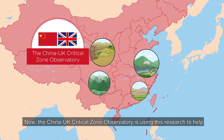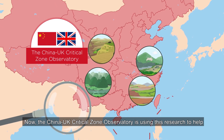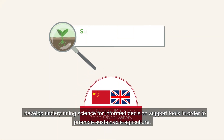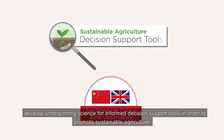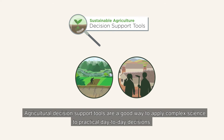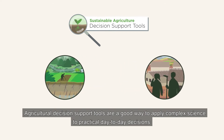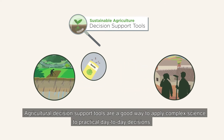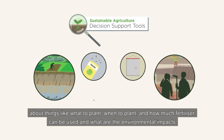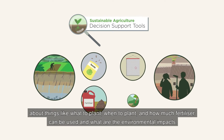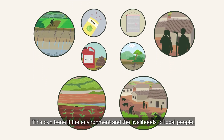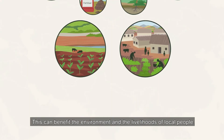Now the China-UK Critical Zone Observatory is using this research to help develop underpinning science for informed decision support tools in order to promote sustainable agriculture. Agricultural decision support tools are a good way to apply complex science to practical day-to-day decisions about things like what to plant, when to plant, how much fertiliser can be used, and what the environmental impacts are. This can benefit the environment and the livelihoods of local people.